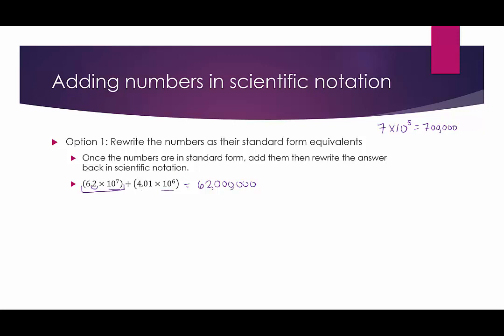4.01 times 10 to the sixth means moving the decimal six places to the right — one to get past the 1, and then four more zeros — giving 4,010,000. Now we add 62,000,000 plus 4,010,000. Lining them up by place value and adding, we get 66,010,000 in standard form.